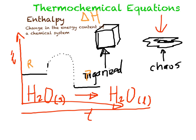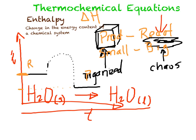If the initial state has a bigger amount of energy than the final state, you take the energy of the products minus the energy of the reactants. The product is a small number and the reactants is a big number, so you get a negative number. When delta H is negative, that means the reaction is exothermic.